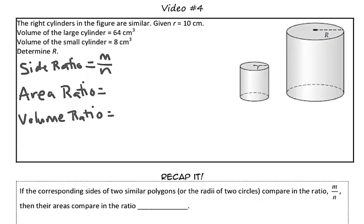So, if the side ratio is m over n, then the area ratio is m squared over n squared, and then the volume ratio would be m cubed over n cubed.